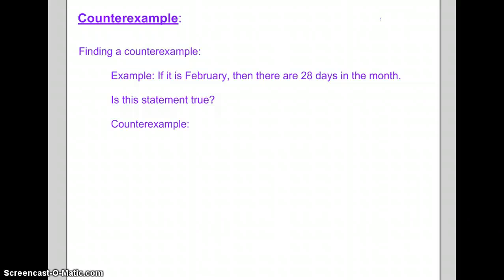A counter example is the case where the conjecture is false. With a counter example, all you need is one counter example to prove a statement to be false. I could give you a million things that make a statement true, but as soon as someone gives me an example that makes it false, the entire statement becomes false.